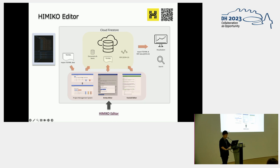So, this is a project — the list of projects that we have. We have the Shibusawa project, and this is the document, the second layer, and there are items like this.